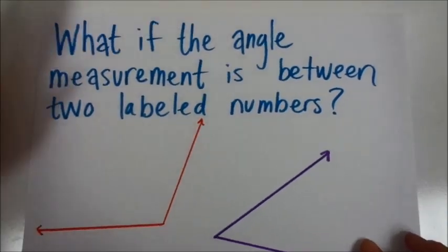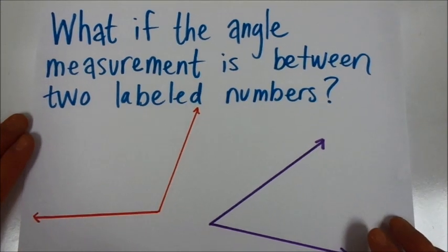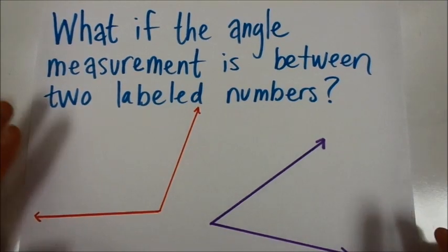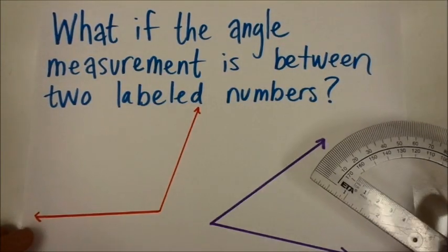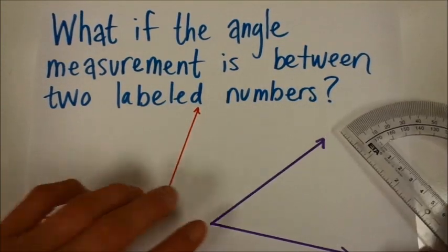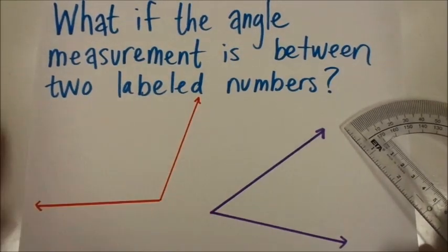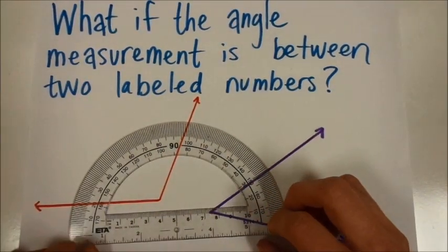All right, a couple of what if kind of things to think about. What if the angle measurement is between two labeled numbers? In our last example, it fell right on 130, but in this case, these two are not. So we're going to see what we should do in that case.